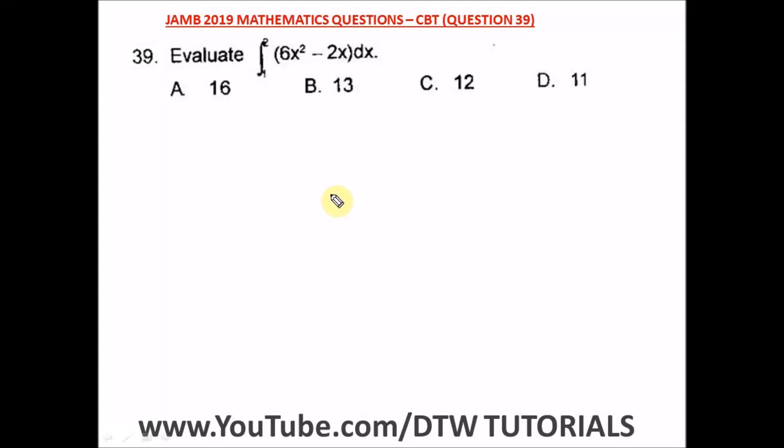Question 39 of the 2019 mathematics past question, that is your UTM ECBT exam. It says evaluate the integral of 6x squared minus 2x dx, and we have an upper and lower limit. So from here let's integrate this.